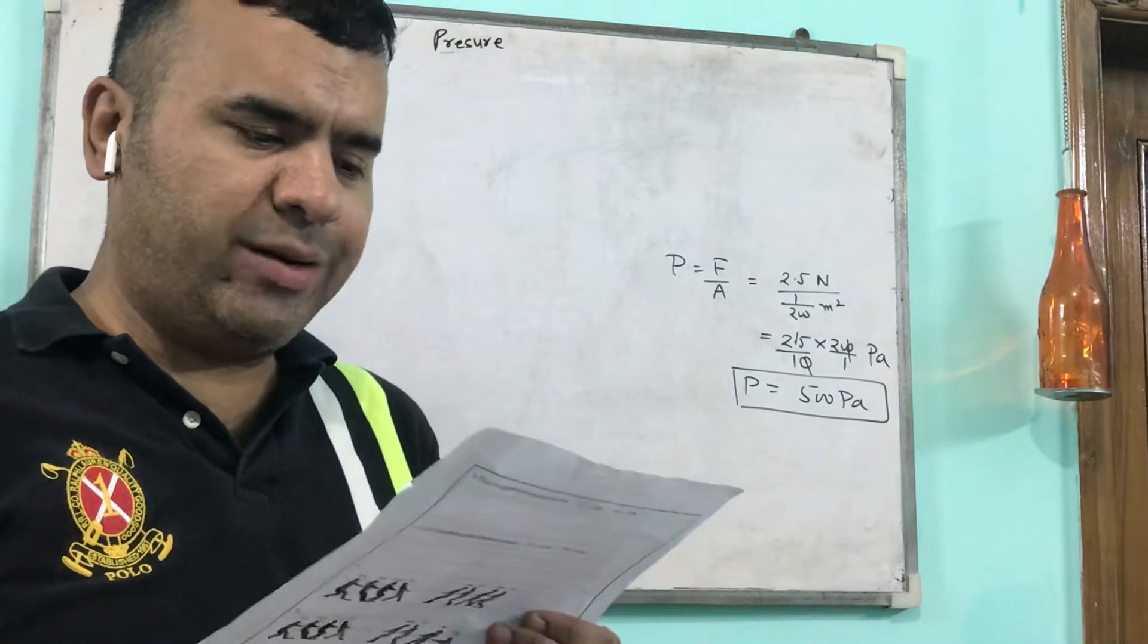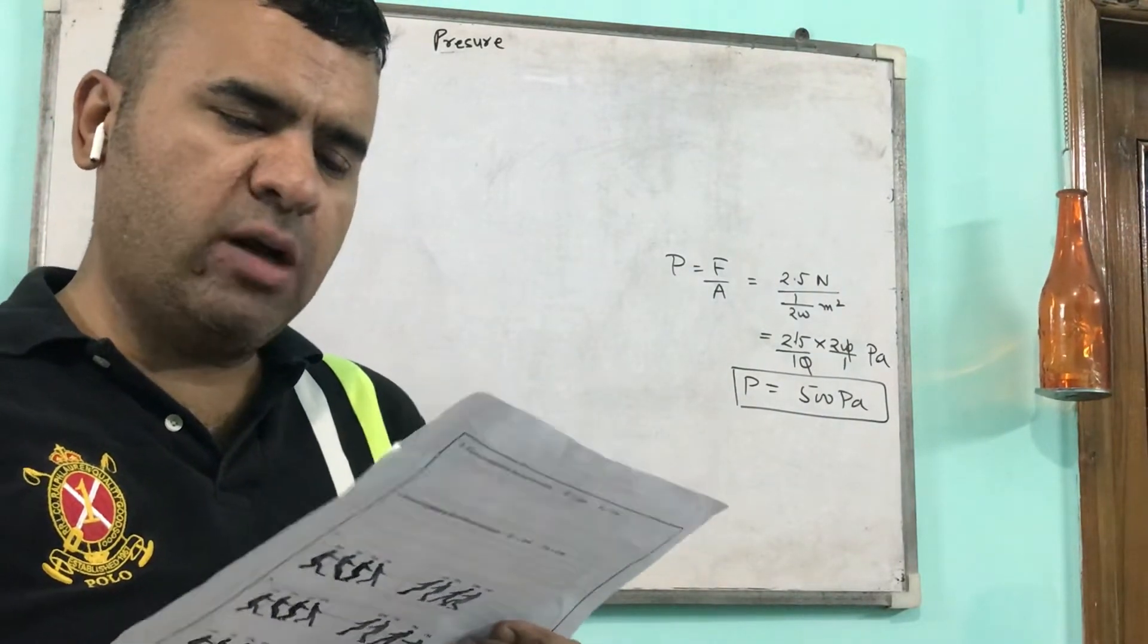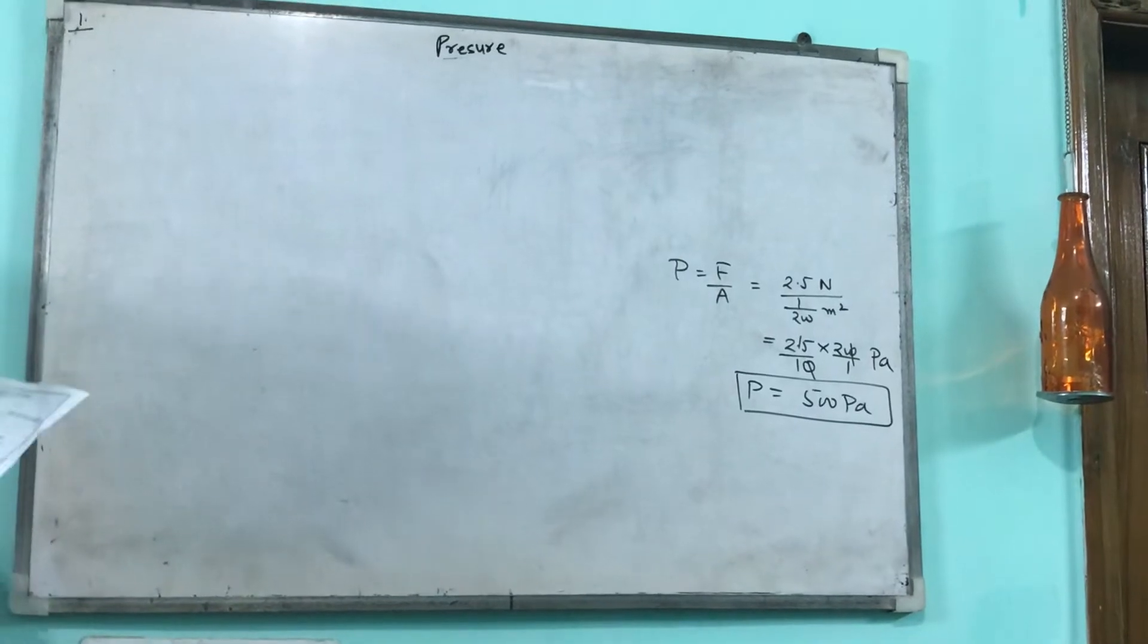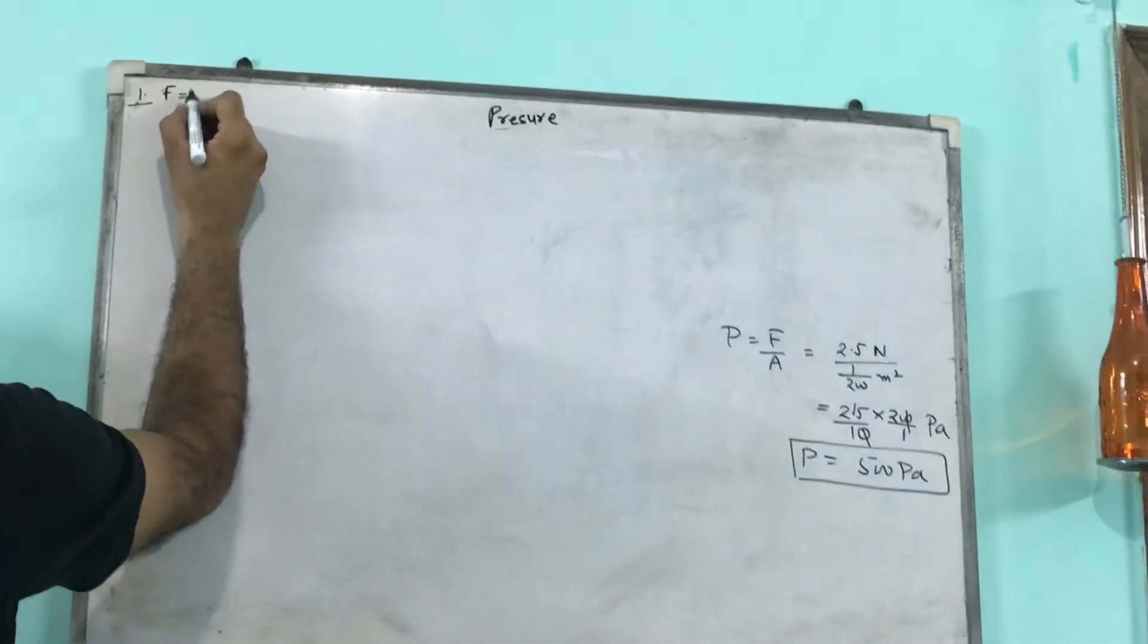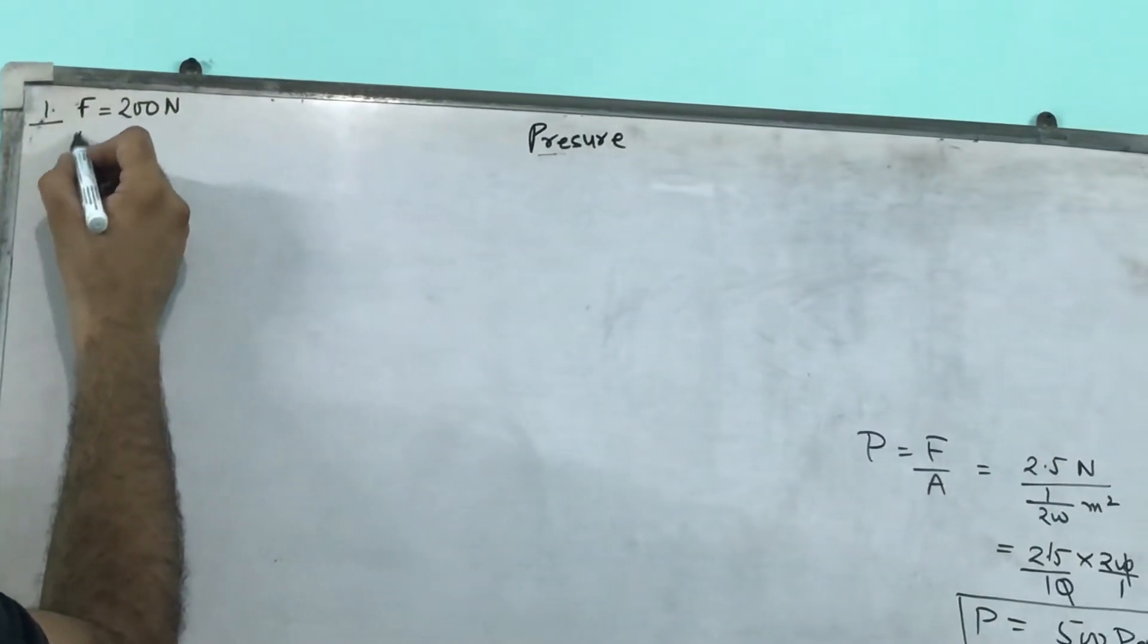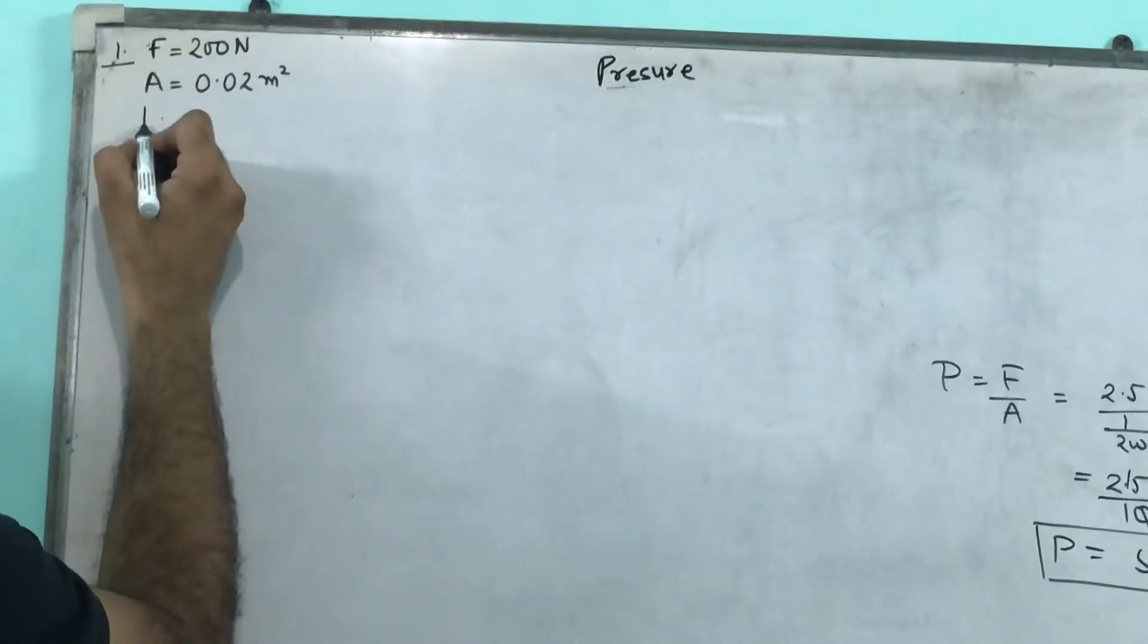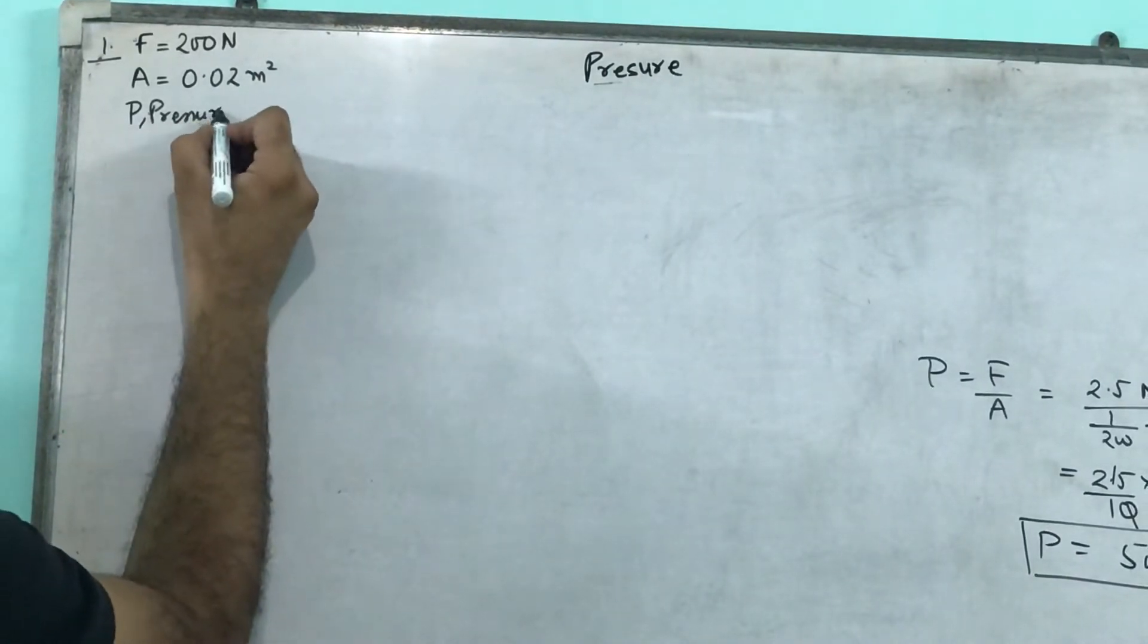A normal force of 200 newton acts on an area of 0.02 meter square, find the pressure in pascal. Whatever is the data written in the question, I'm writing here my dear student. Force, a normal force, is 200 newton. Area is 0.02 meters square. Pressure, capital P, pressure is unknown.